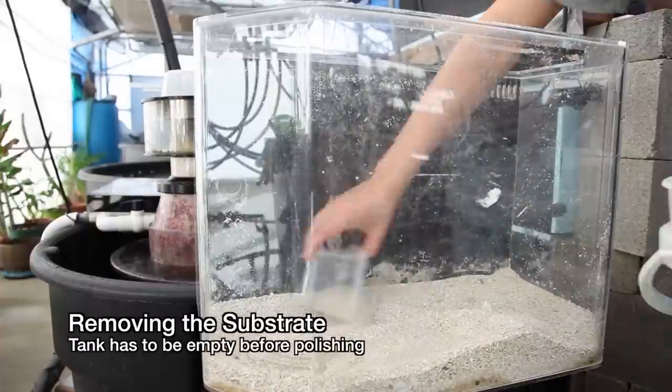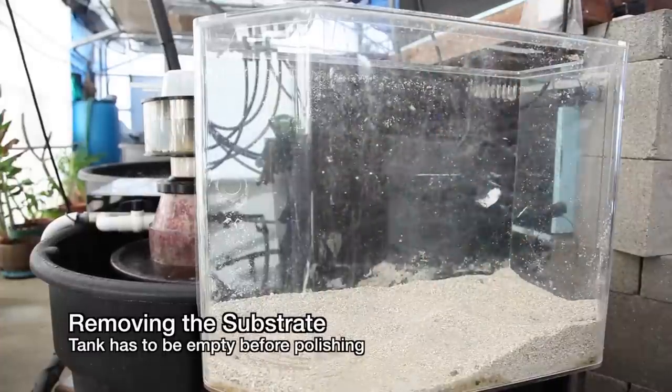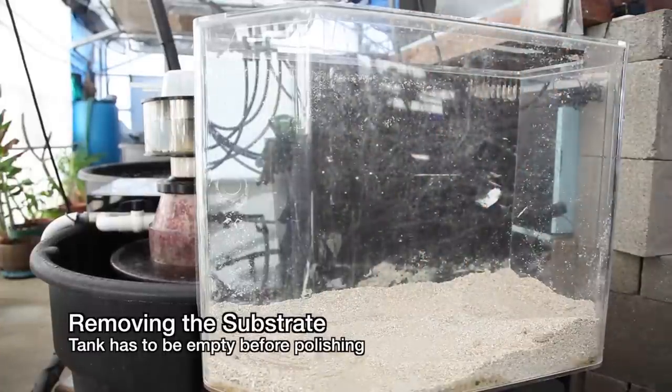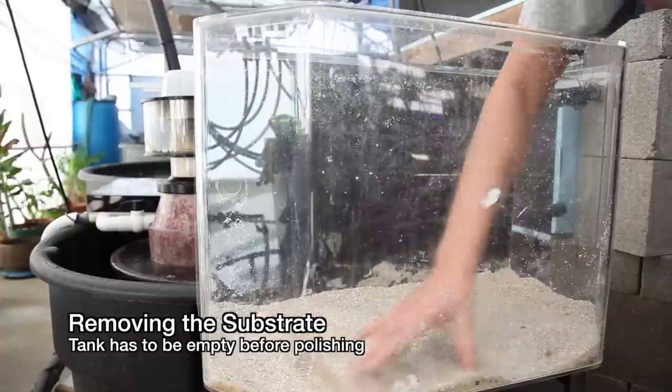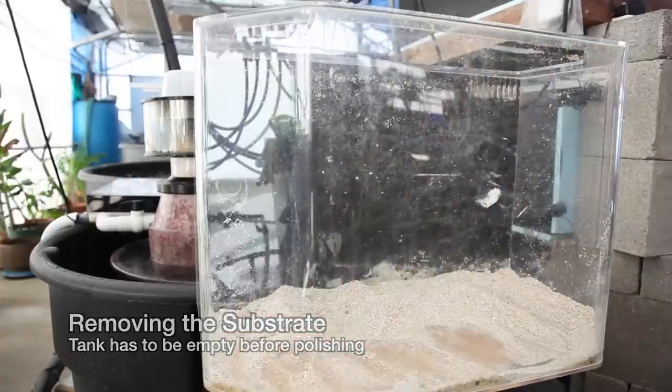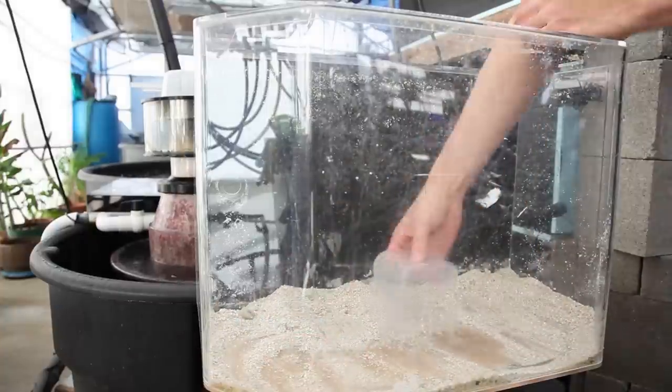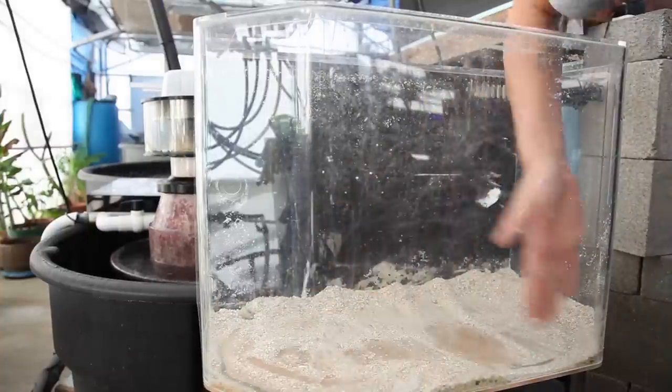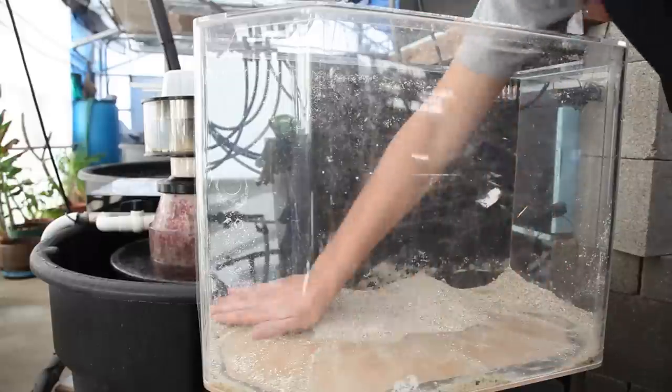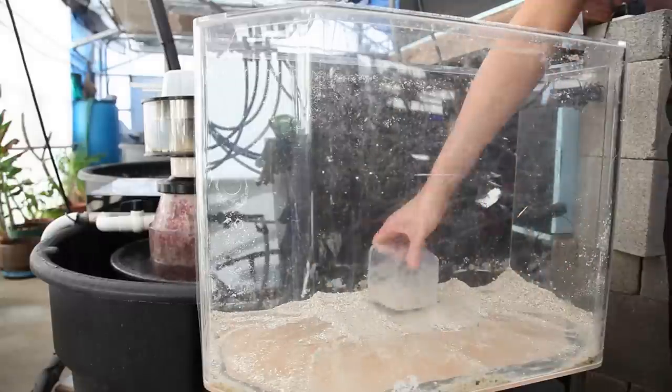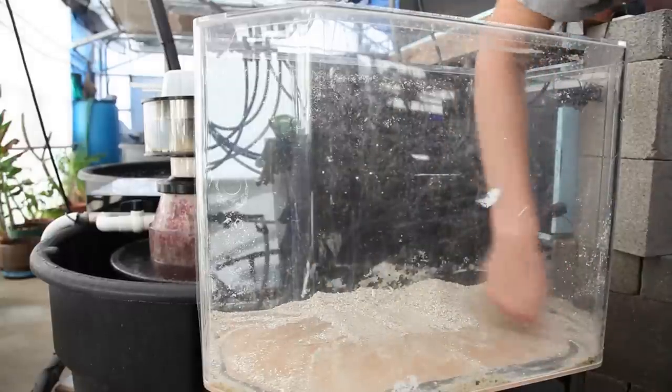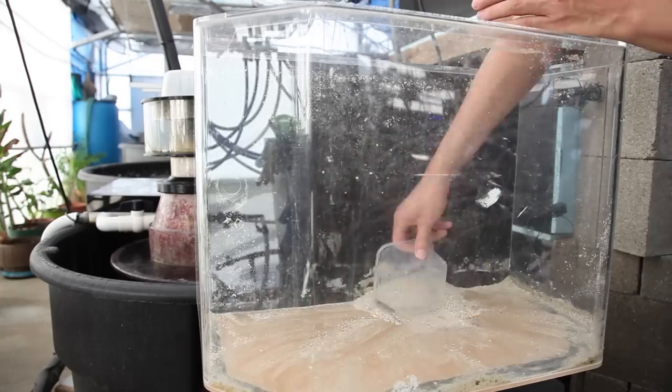While our equipment soaks, I am now going to take out the substrate. Substrate in an acrylic tank is a judgment call because on one hand, it greatly increases the risk of developing scratches in the tank. On the other hand, I really like the look of a tank with a substrate. Regardless, it has to be removed for the time being so we can remove the scratches and polish it up.